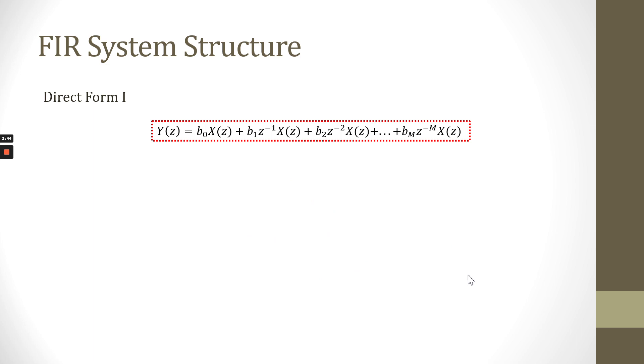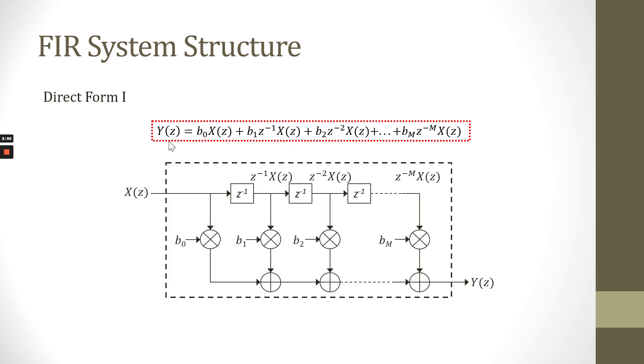This is direct form-1 that based on the equation of output FIR in Z domain. Again, we have the same, almost similar structure, but we have X(z) as the current input and Y(z) as the current output. In the middle, we have z^(-1). This is the delay unit time for Z domain. At this path is the current input X(z) multiplied with the coefficient b0, it will produce b0 X(z).